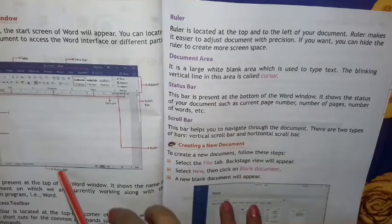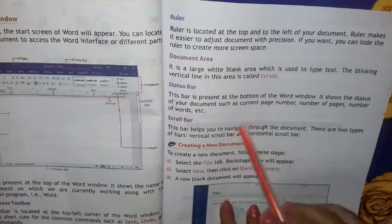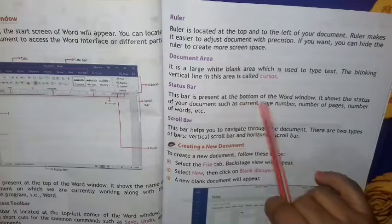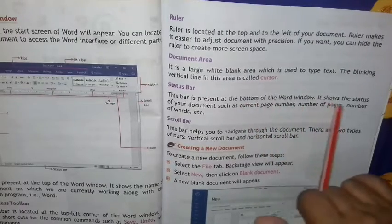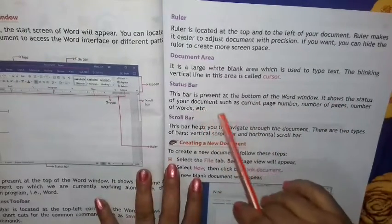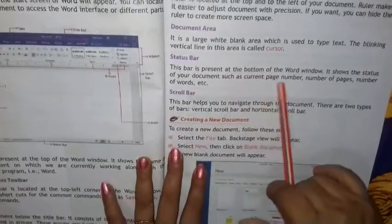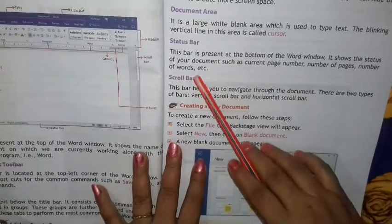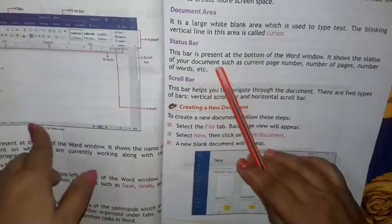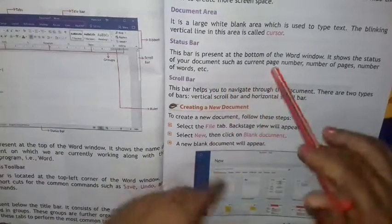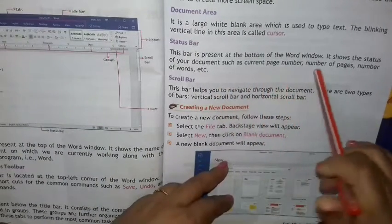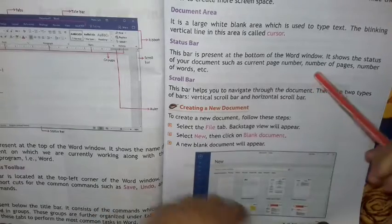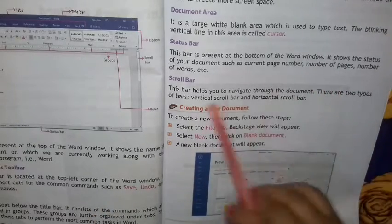Status bar — यह नीचे देखो status bar दिया है। This bar is present at the bottom of the Word window. It shows the status of your document, such as current page number, number of pages, and number of words. इसमें बहुत सारी information रहती है — जैसे किस page में हम लोग काम कर रहे हैं, page number रहता है, कितने words हुए हैं वो भी show करता है।